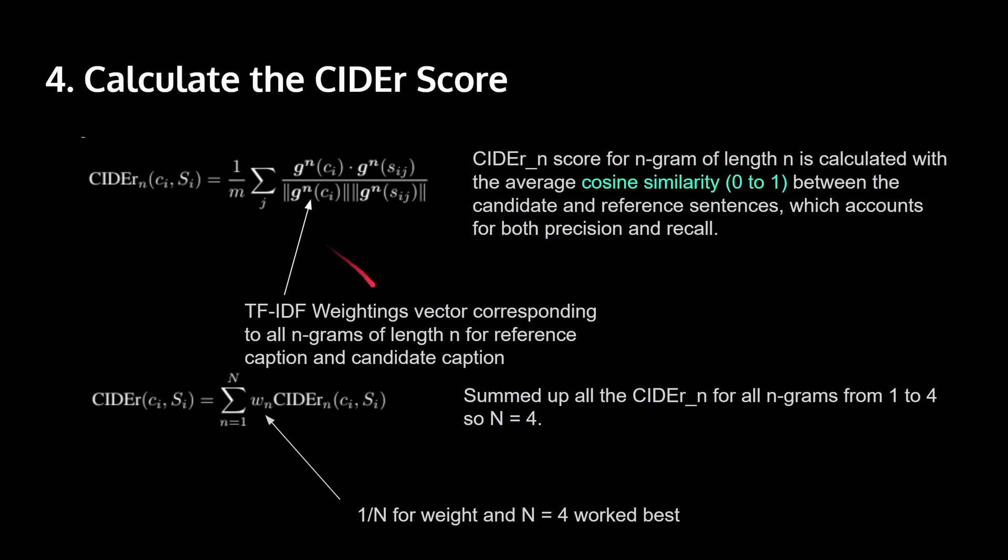Okay, so then we end up taking the sum of this and we apply weighting. They decided that 1 over N is the best weighting. And for N, they decided that 4 worked the best. And remember, we talked about this, where they only took n-grams from 1 to 4. So this is what it is. And they're essentially taking the sum of all CIDEr N from CIDEr 1 to CIDEr 2 to CIDEr 3 to CIDEr 4. They sum them all up, apply the weighting, which is 1 over 4 in this case, if N is equal to 4.